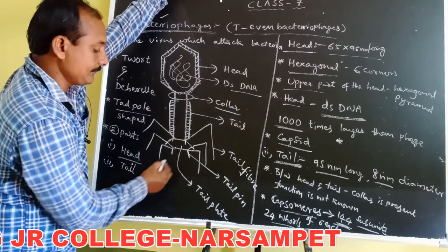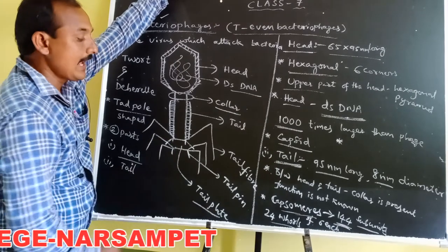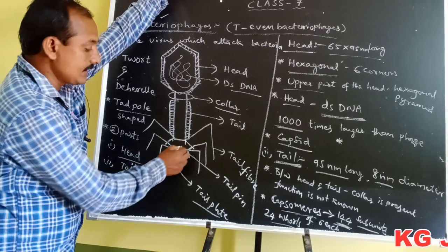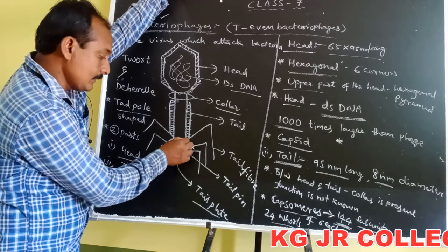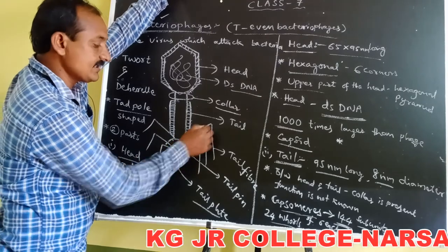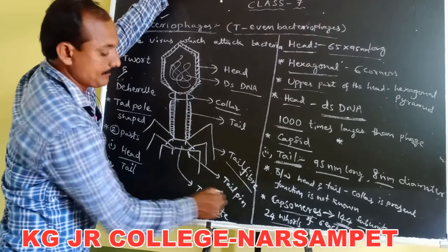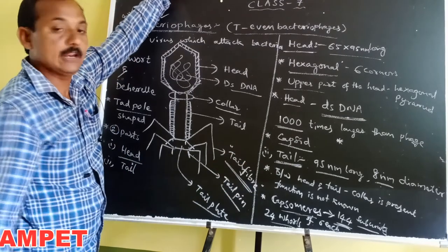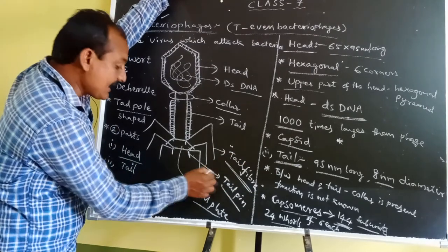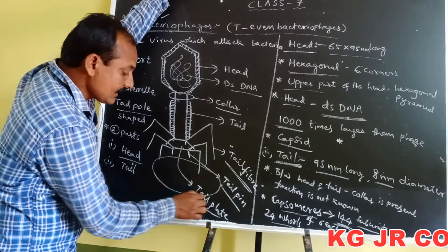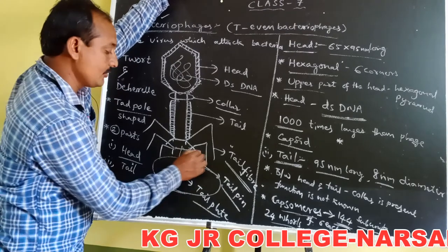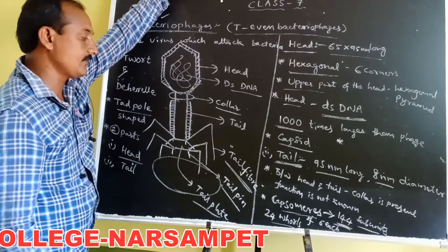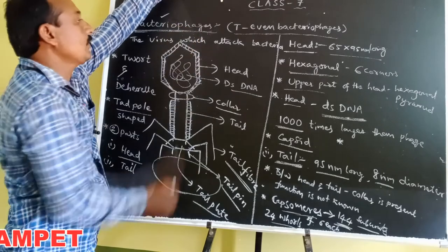The tail plate is hexagonal in shape and also consists of 6 corners. Each corner of the tail plate consists of 1 tail fiber and 1 tail pin. Due to the presence of tail fibers, bacteriophages attach to the receptive site of the bacteria.